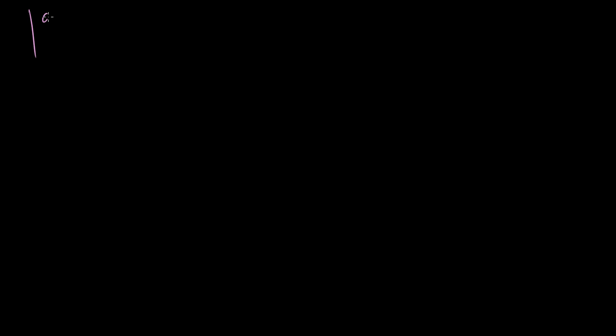Let's explore what happens to determinants when you multiply them by a scalar. If we have the determinant of the matrix A, B, C, D, by definition, the determinant is going to be equal to A times D minus B times C. That's the determinant right there.